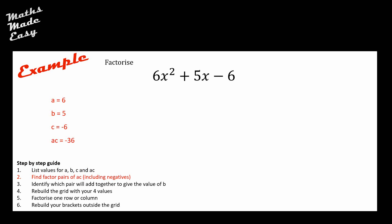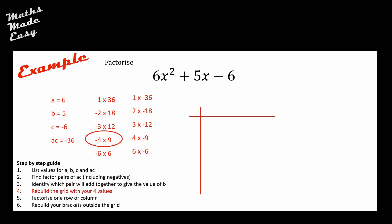Step 2: find factor pairs of ac (negative 36), including negatives. So we can have negative 1 × 36, negative 2 × 18, and so on, then flip those to positive 1 × negative 36, positive 2 × negative 18, etc. I've listed all factor pairs in a logical order. Step 3: identify which pair adds together to give b. My b value is positive 5, and the pair that works is negative 4 and positive 9, since −4 + 9 = +5.